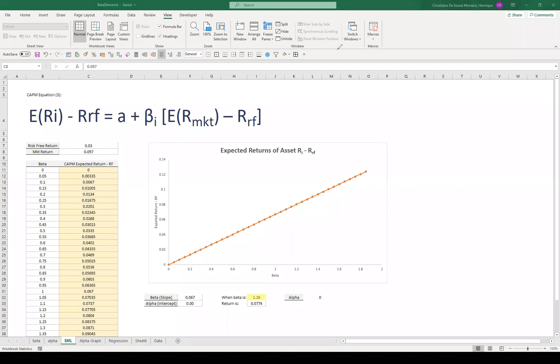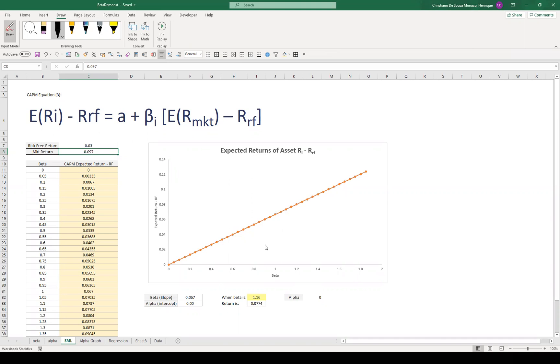If CAPM holds, it means that you're going to see that line, and the expected return of an asset should be just dependable on beta. And it's quite easy to understand here if you think that the higher the beta, the higher the returns. That's what it says. Basically, the excess return of the risk-free rate just depends on beta, right?